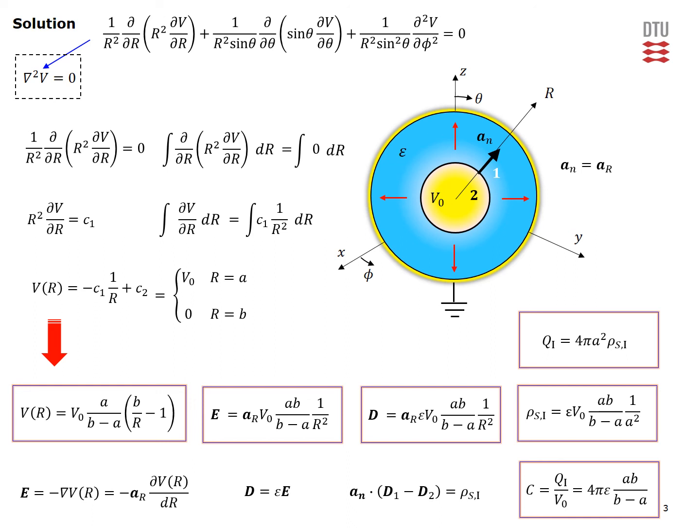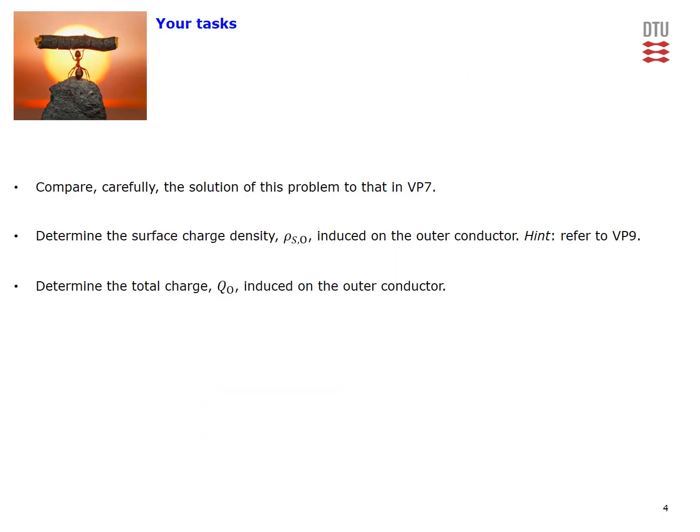In this problem, we derived the result by first assuming the potential difference between the two conductors, whereas in video problem 7 we calculated the capacitance by first assuming the charge on the conductors — a quite opposite approach. We are now done with our tasks. For your exercises: compare this solution carefully to video problem 7, determine the surface charge density induced on the outer conductor (refer to video problem 9 as a hint), and determine the total charge in Coulombs on the outer conductor. Thank you for your attention.